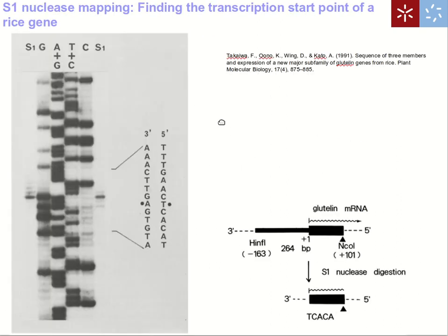This is a real-world example of S1 nuclease mapping to find the transcription start point. These authors used this technique to find the starting point for a rice gene. They ran the double-stranded fragment in parallel with a sequencing gel so they could exactly pinpoint the nucleotide where transcription starts. This is a very precise technique allowing identification of the exact transcription start point.